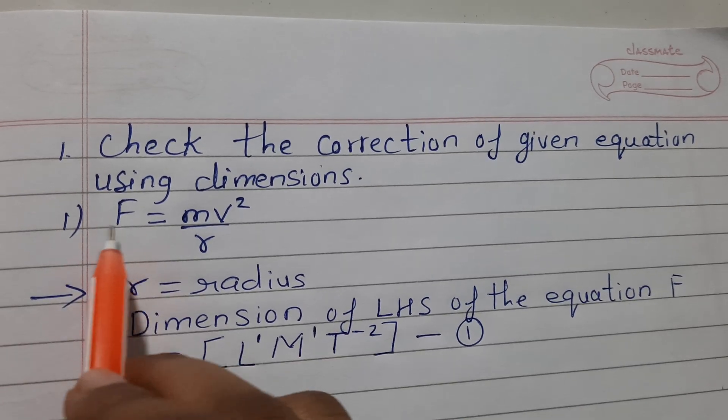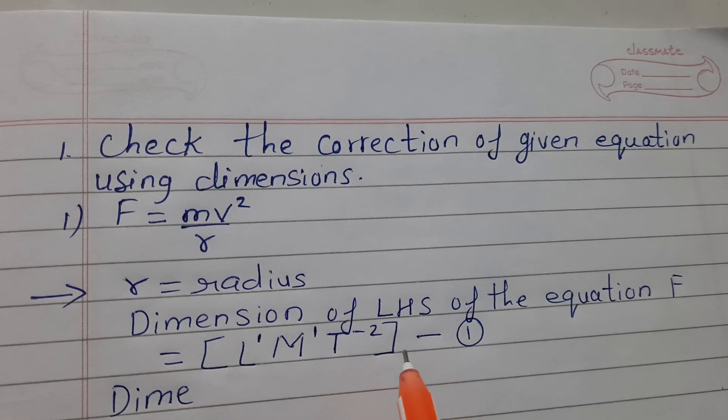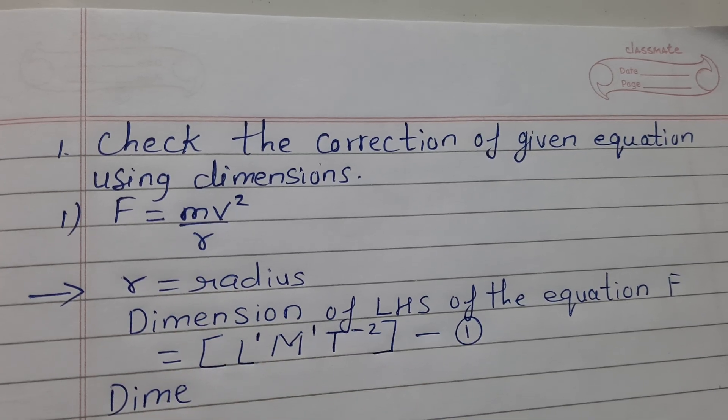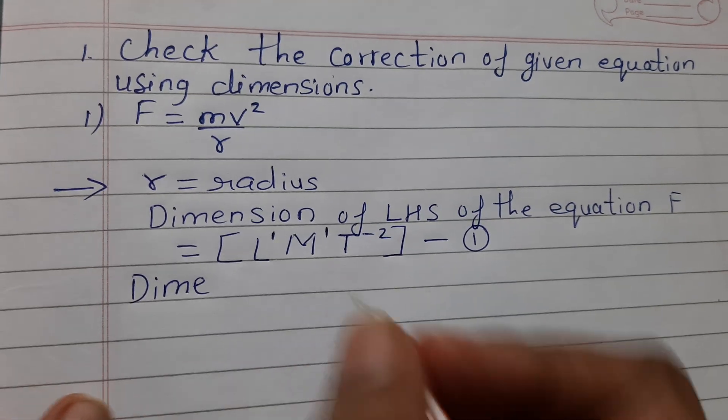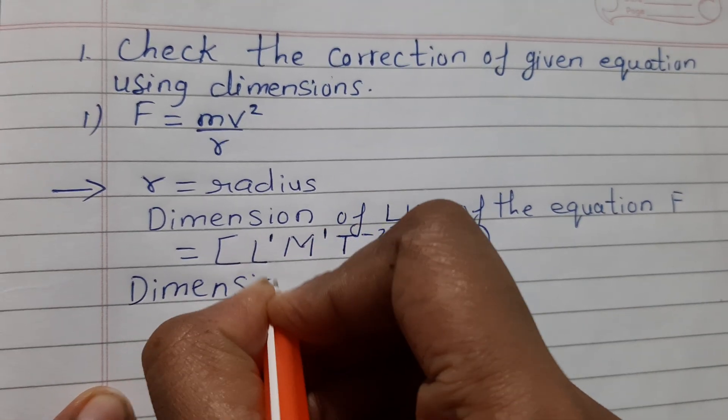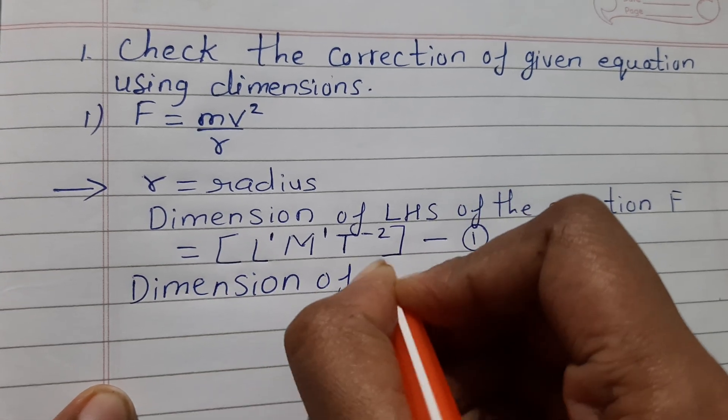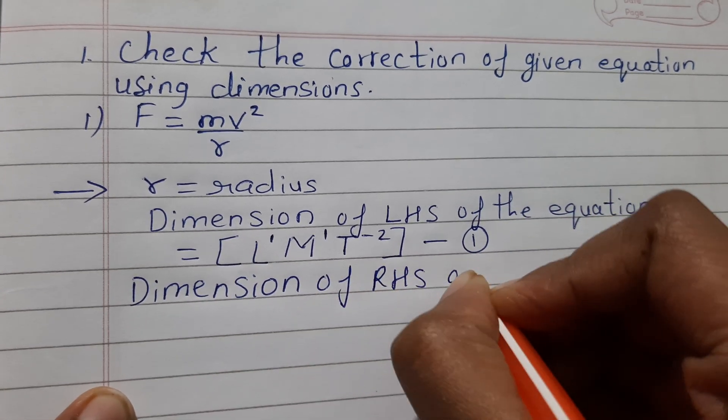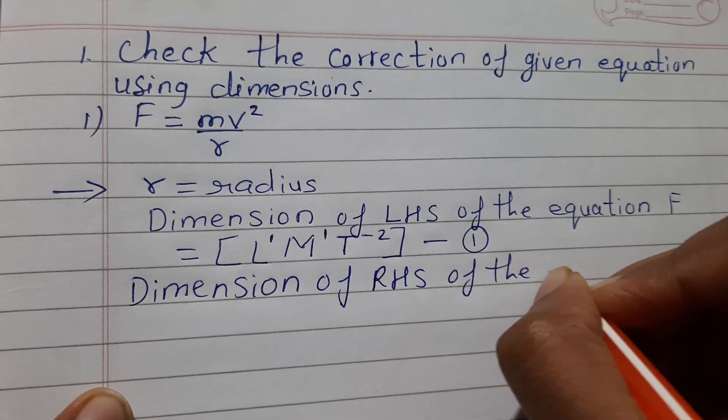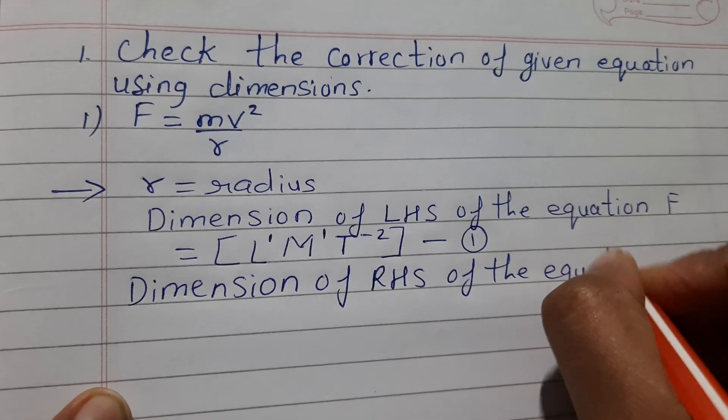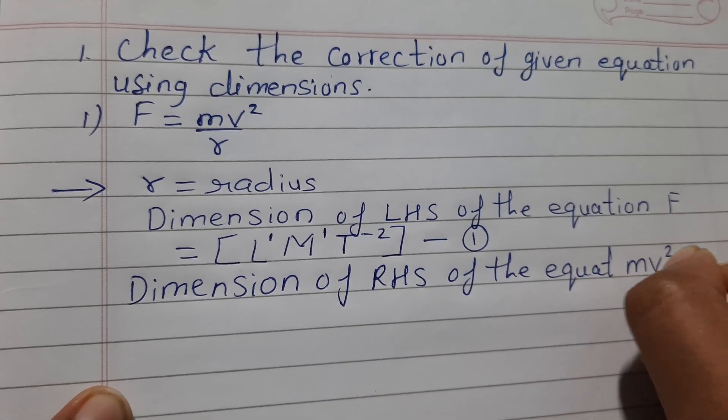Now dimension of right hand side. We have written the dimension of left hand side, same way write the dimension for right hand side. Dimension of right hand side of the equation mv² upon r.